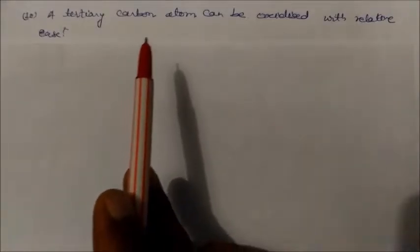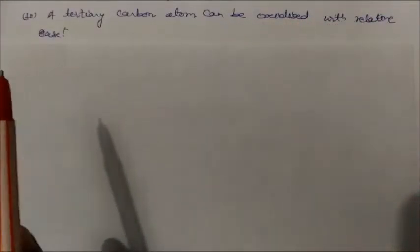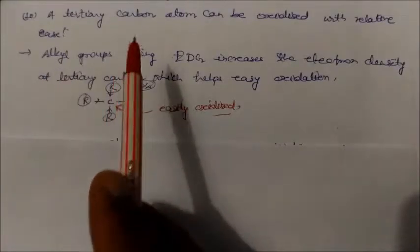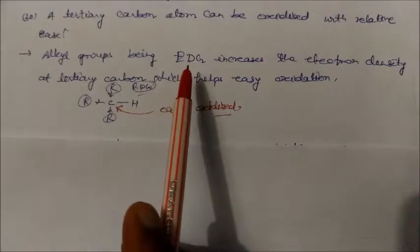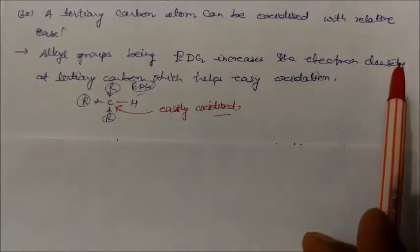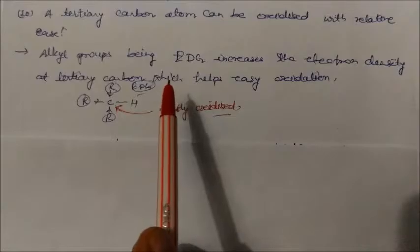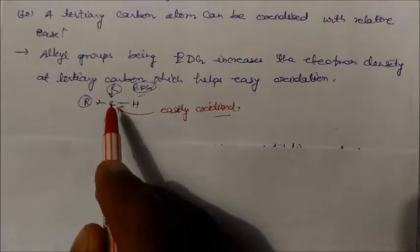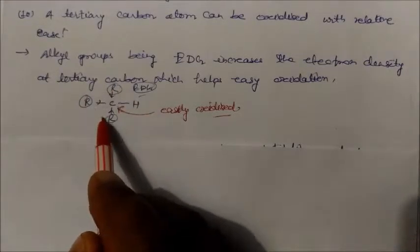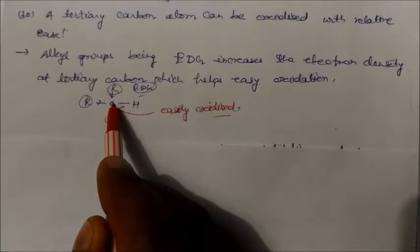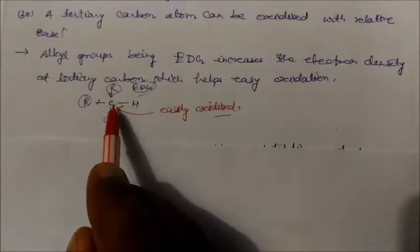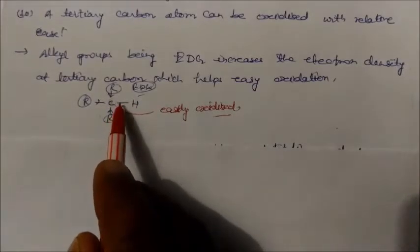A tertiary carbon atom can be oxidized with relative ease. This happens because in tertiary carbon, alkyl groups are electron-donating groups, which increase the electron density at the tertiary carbon. The three attached methyl groups donate electrons to this carbon, weakening the carbon-hydrogen bond, which makes it easily oxidized.